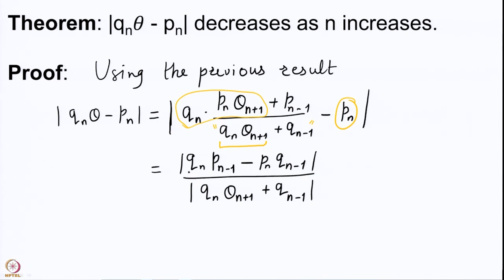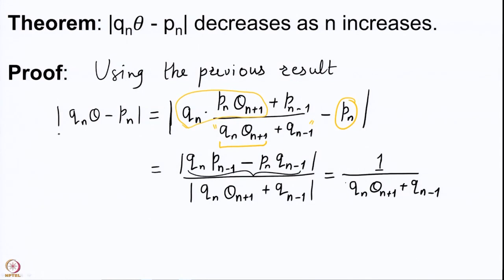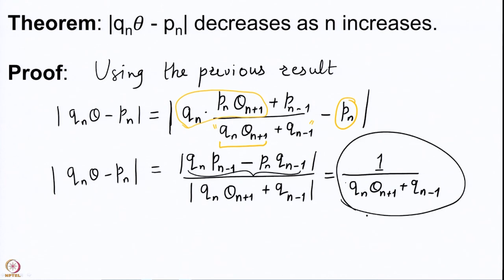We observe that the numerator Qₙpₙ₋₁ - Pₙqₙ₋₁ is the term we have seen quite often — it is ±1, so under the modulus sign it becomes simply 1. The denominator is a positive quantity because the Qₙ's are all positive and the complete quotients θ from 1 onwards are bigger than 1 (even if a θₙ equals its floor, Qₙ₋₁ is there). So we have proved that |Qₙθ - Pₙ| = 1/(Qₙθₙ₊₁ + Qₙ₋₁).